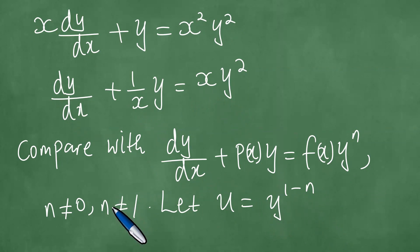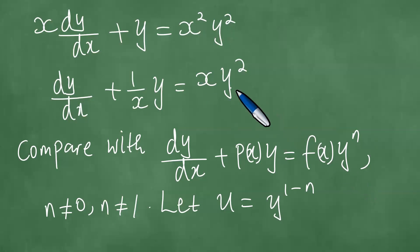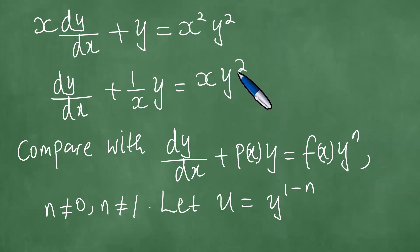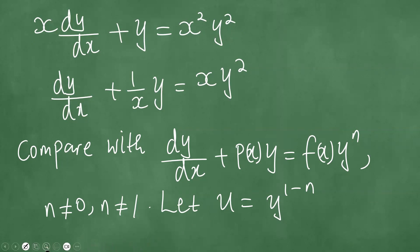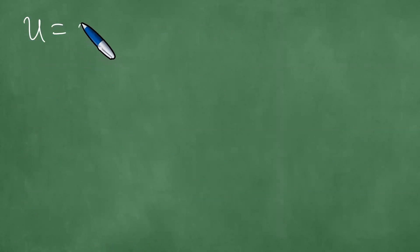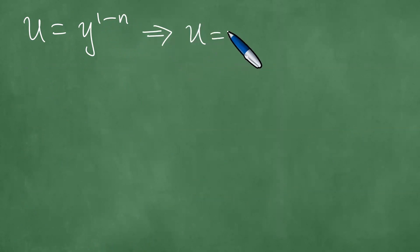We proceed to solve this differential equation in detail. By comparison, in the Bernoulli equation there is y to the power n; here we have y squared, so n equals 2. This means u equals y to the power 1 minus n, which is y to the power 1 minus 2.